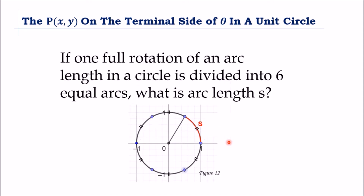If one full rotation of an arc length in a circle is divided into 6 equal arcs, what is arc length S? Its arc length will be 2π over 6, because you have 6 equal arcs in 2π. That is, S = π/3.